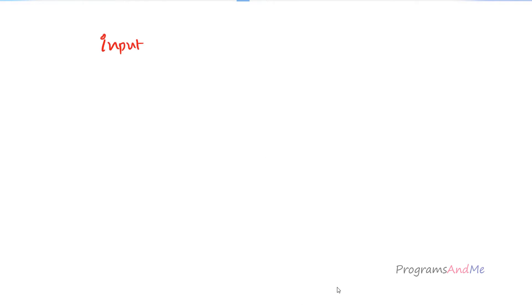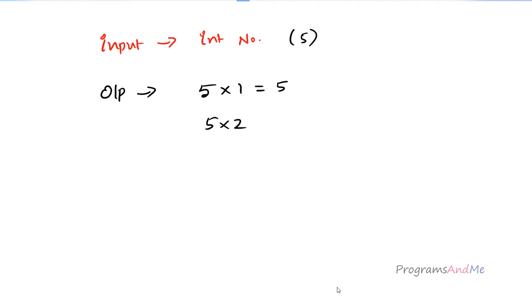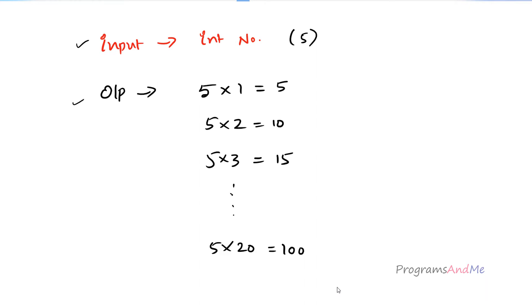The input of our program is an integer number, and the output is the multiplication table. For example, if I take the number as 5, I need to print: 5 ones are 5, 5 twos are 10, 5 threes are 15, and so on till 5 twenties are 100. So this is the input, this is the output.